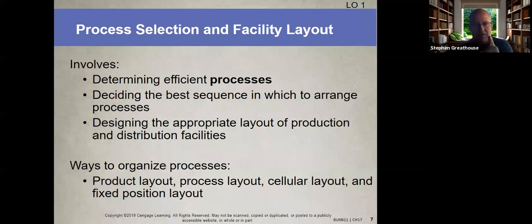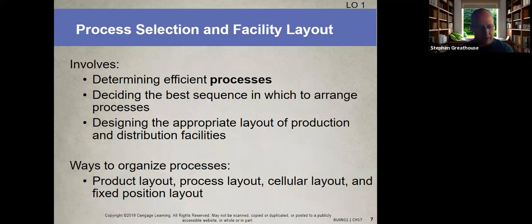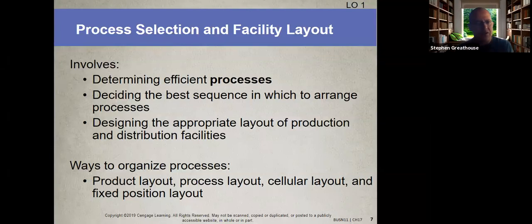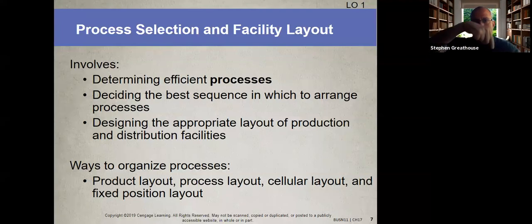A cellular layout falls between a product layout and a process layout — it's a hybrid. It groups different types of machines or equipment into self-contained cells that produce a family of products or even an entire product. The product moves station to station within the cell in sequence, but a small team of employees each perform many more activities rather than one highly specialized task.